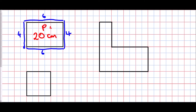If we look at the square — if I started here I would walk up four squares, across four squares, down four squares, and across four squares. How far have I traveled in total? Four plus four is eight, plus four is twelve, plus four is sixteen centimeters.